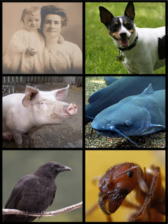Various birds are omnivorous, with diets varying from berries and nectar to insects, worms, fish, and small rodents. Examples include cassowaries, chickens, crows and related corvids. In addition, some lizards, turtles, fish such as piranhas and catfish, and invertebrates are also omnivorous.